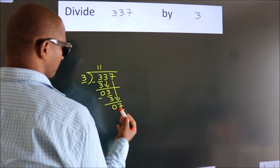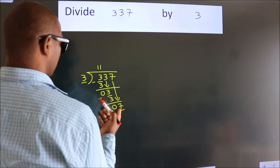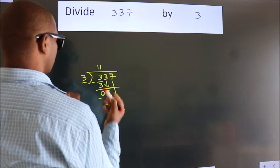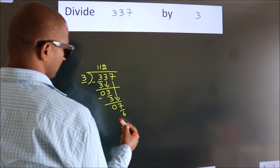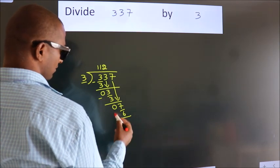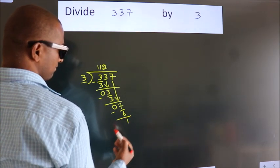So, 7. A number close to 7 in the 3 table is 3 times 2, which is 6. Now we subtract and get 1.